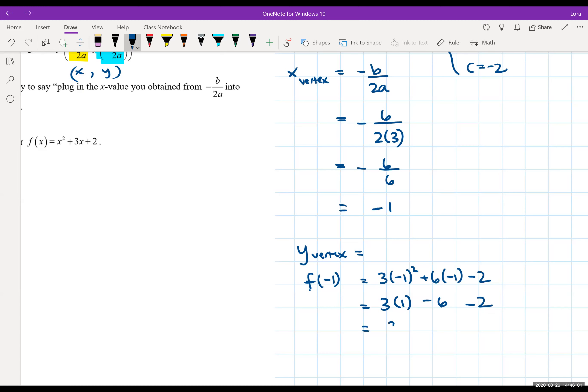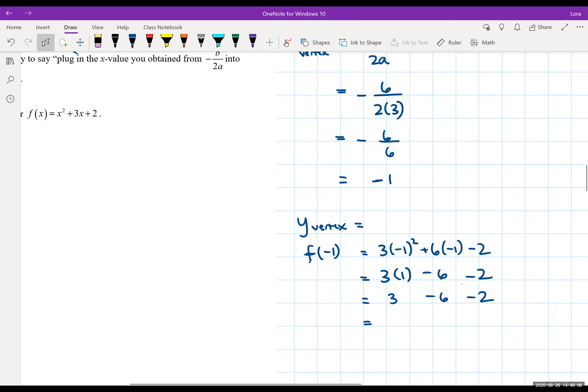So what do we have? 3 minus 6 minus 2. So 3 minus 6 negative 3. Negative 3 minus 2 is negative 5. We should have our y value of the vertex.